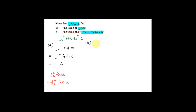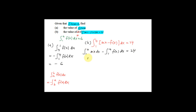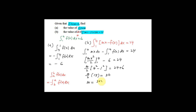For Part B, find the value of m if integration from 1 to 4 of (mx − f(x)) dx equals 24. Splitting the integral: integration from 1 to 4 of mx dx minus integration from 1 to 4 of f(x) dx equals 24. Integrating mx gives m·x²/2 evaluated from 1 to 4, minus 6 equals 24. So m/2 times (16 − 1) equals 30, giving m/2 times 15 equals 30, therefore m equals 4.